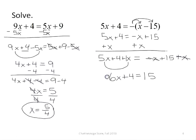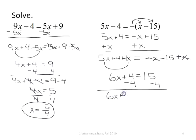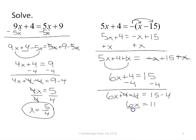Now my x terms are together, so I want to get all terms that don't contain x on the other side. I subtract 4 from both sides: 6x plus 4 minus 4 equals 15 minus 4. The plus 4 minus 4 add up to 0, so I have 6x equals 11. Since 6x means 6 times x, to get x by itself I divide by 6.